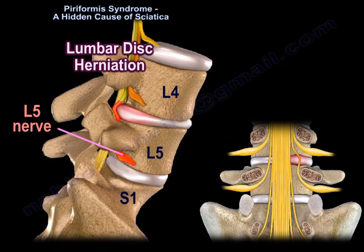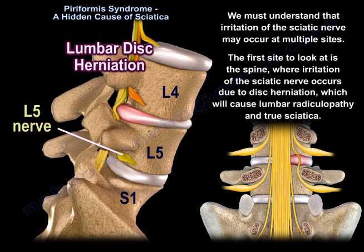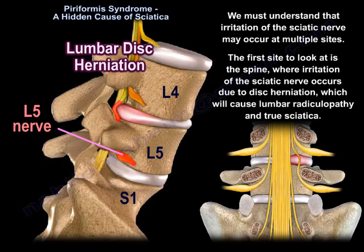We must understand that irritation of the sciatic nerve may occur at multiple sites. The first site to look at is the spine, where irritation of the sciatic nerve occurs due to disc herniation, which will cause lumbar radiculopathy and true sciatica.